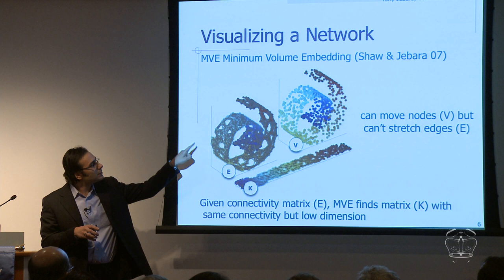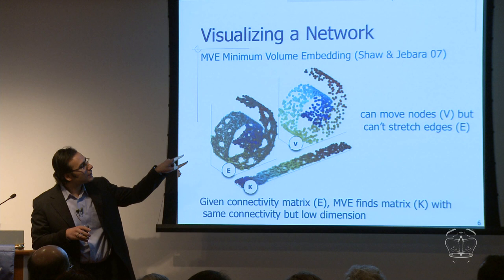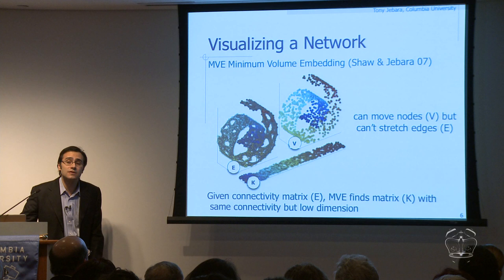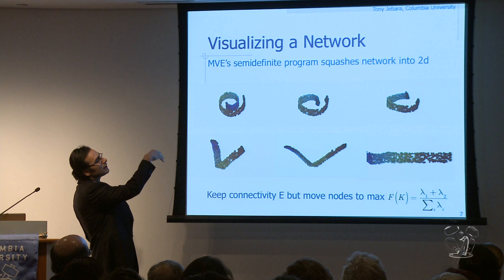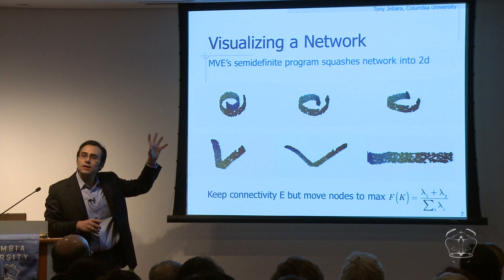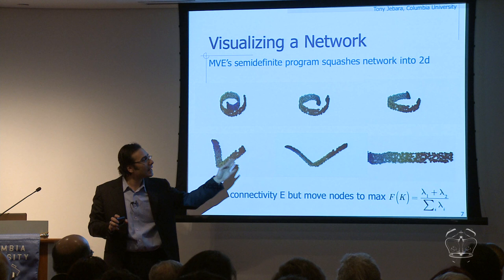In other words, from matrix E, which describes the connectivity, find another matrix K which has the same connectivity but is only two-dimensional, so we can look at this thing in 2D. That's the minimum volume embedding algorithm. Here's roughly how it works: we start off with a 3D network and solve a program called the semi-definite program. It squashes the network into 2D by unwrapping and moving the nodes — all the edges stay fixed like little metal links that can't squeeze or stretch — and the algorithm gives you back a 2D version of the 3D network.